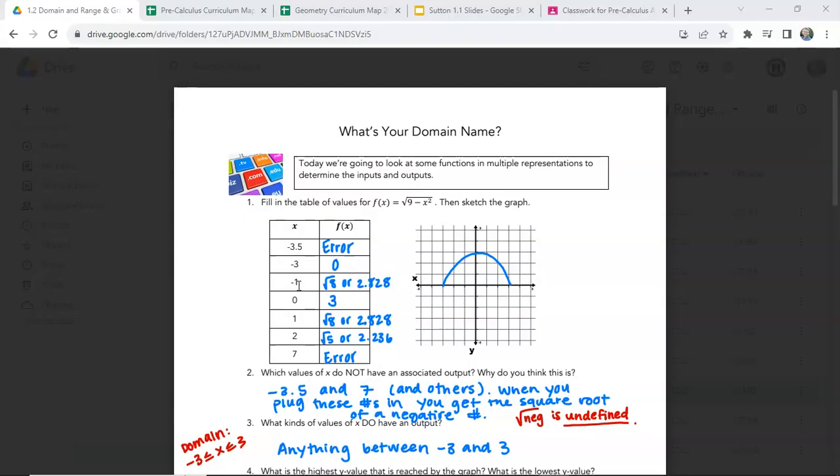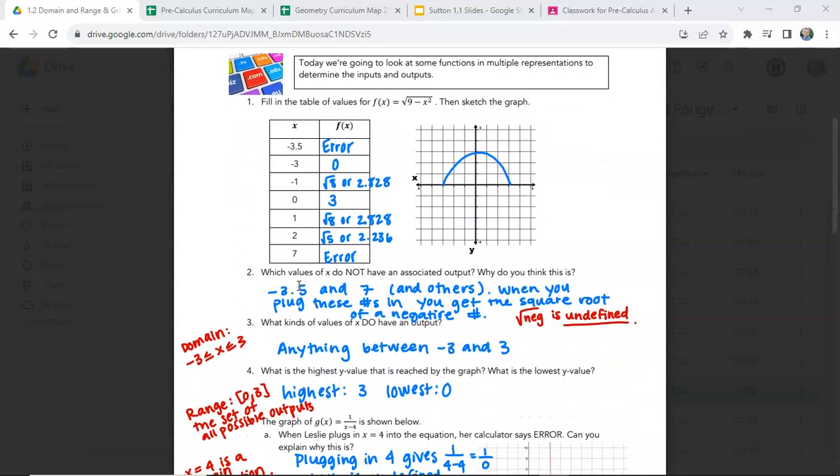Okay, so here's what you should have for the bell work here. So inputting negative 3.5, you should have got an error. Inputting negative 3, you should get 0.